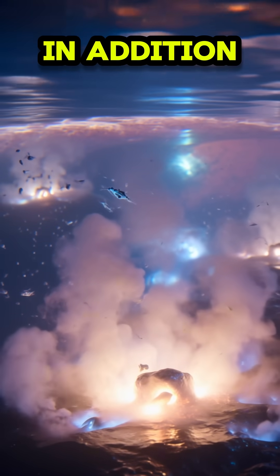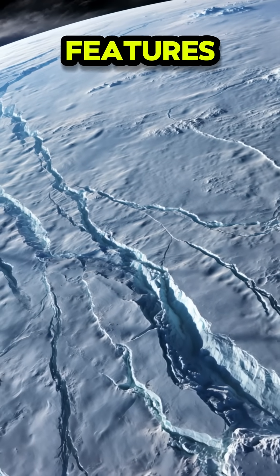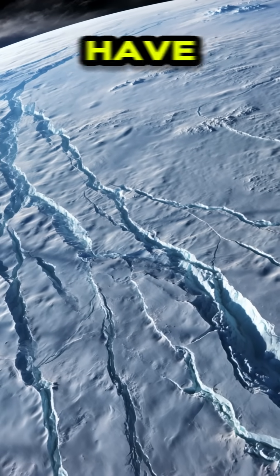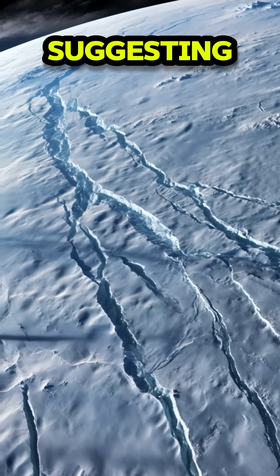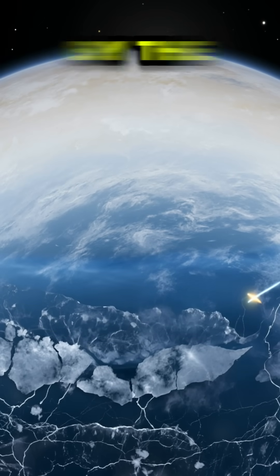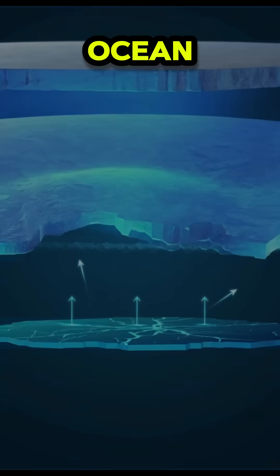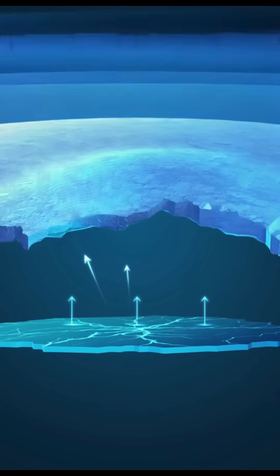In addition to its ocean, Europa's surface is dotted with fascinating features. Scientists have observed long, linear cracks and ridges, suggesting that the ice is shifting. Some of these features are believed to be caused by the movement of the subsurface ocean, hinting at the dynamic nature of this moon.